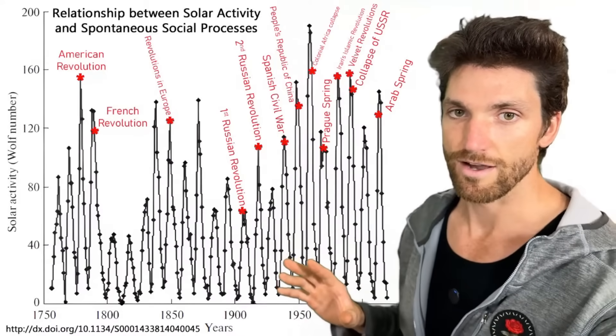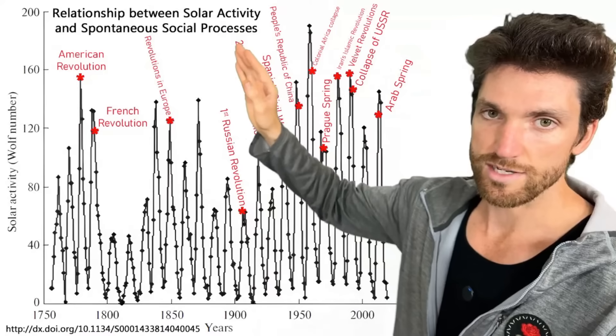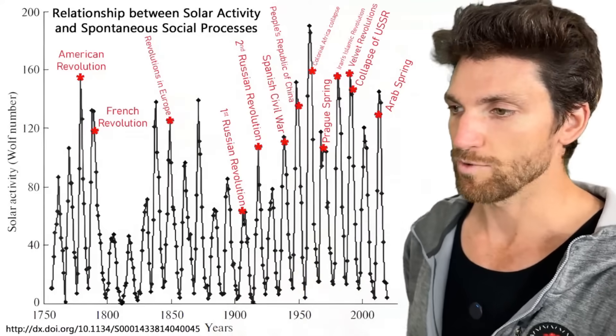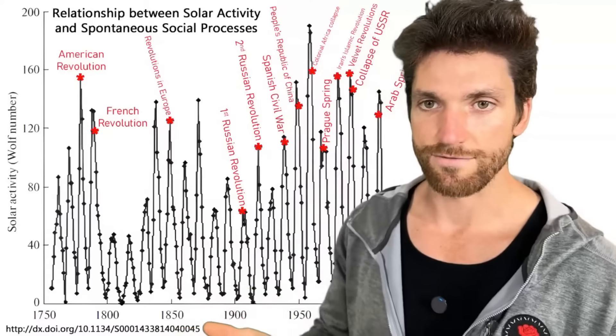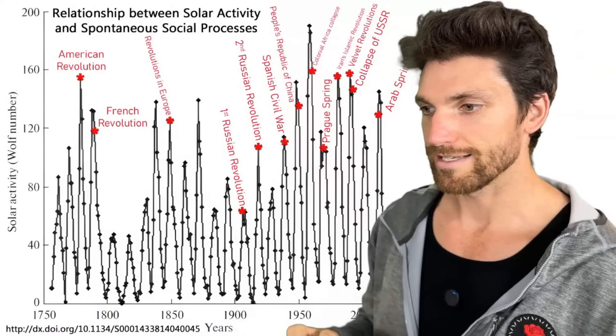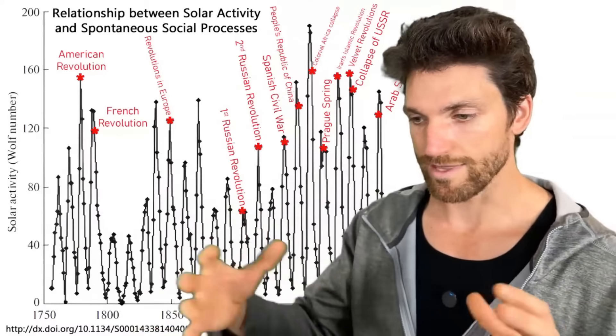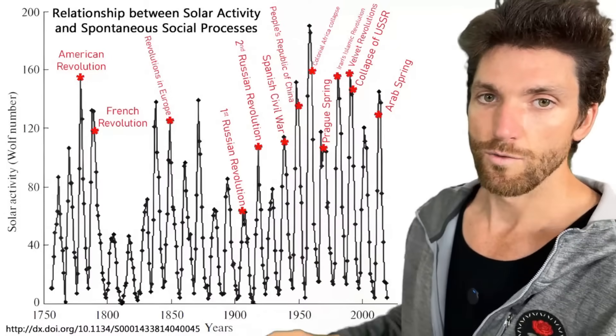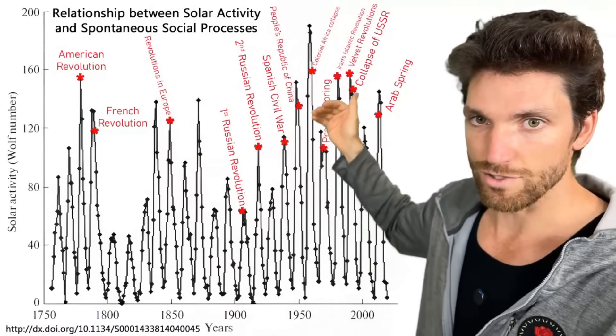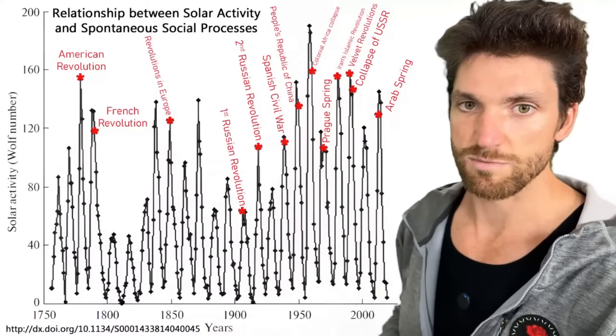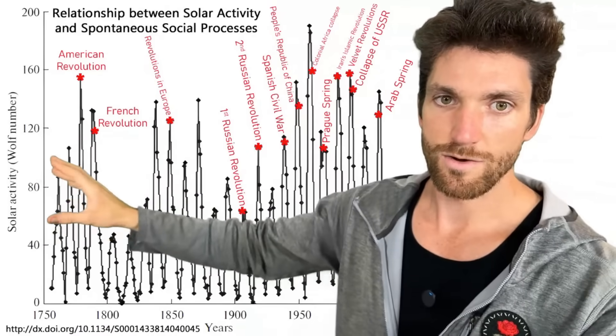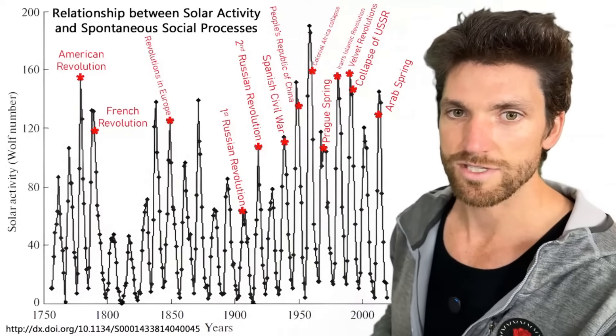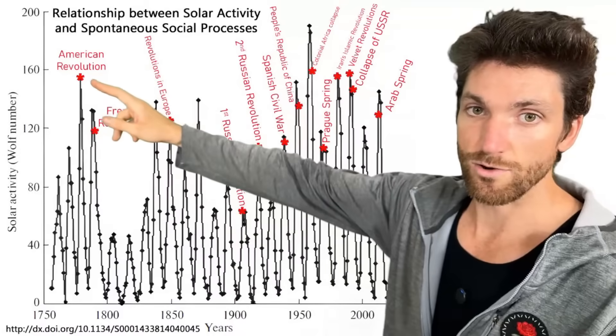We talked about this in that video. But here we see the relationship between solar activity and what are known as spontaneous social processes. So effectively, something like a revolution. That's a classic example. It's kind of spontaneous. There's, of course, underlying factors and there's a buildup to it, but it needs that spark for the fire. Everything leading up to a revolution was building a fire, but it still needs that spark. That's the spontaneous part. Well, look at all the significant revolutions. They all stack on top of solar maximum periods because here we have our solar activity wolf number, which effectively is like a measure of sunspots, but it's a little different than that. It's like a yearly count. And so we see the American Revolution, solar cycle three right there. Boom, solar maximum. French Revolution, boom, solar maximum.